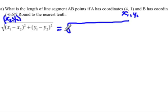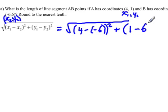So we sub into our formula: 4 minus, and x2 is negative 6, so it would be 4 minus negative 6, and we square that, plus y1 is 1, minus positive 6, and we square that.